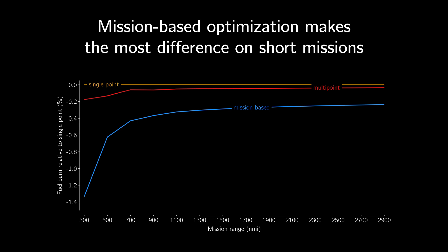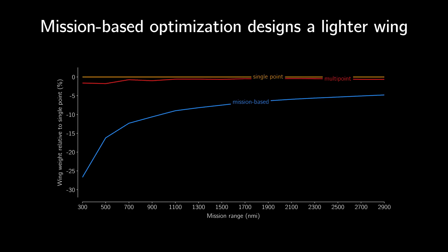Even though it was not the objective, the wing designed with mission-based optimization is substantially lighter than the wing from single and multi-point. This is important because the purchase price of an aircraft is related to its empty weight, so a lighter wing means a cheaper airplane. For both fuel burn and wing weight, it's reassuring to see that mission-based optimization beats both single and multi-point optimization. Mission-based optimization gives the optimizer the most complete understanding of the mission instead of approximating the fuel burn with the Breguet range equation. This better understanding allows the optimizer to find the best possible wing for the mission.